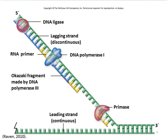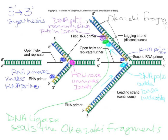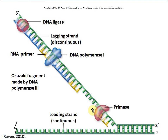One more look at lagging strand synthesis: primase adds the RNA primer, then DNA polymerase III synthesizes the DNA strand. DNA polymerase I removes the RNA primer and puts DNA in its place, giving us blue DNA nucleotides. Then DNA ligase links the two Okazaki fragments together, sealing that bond.